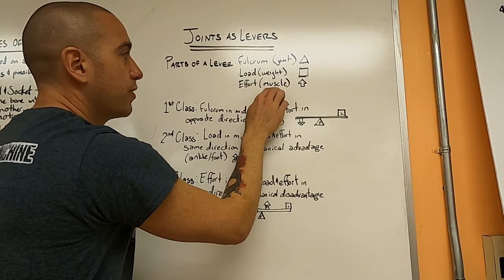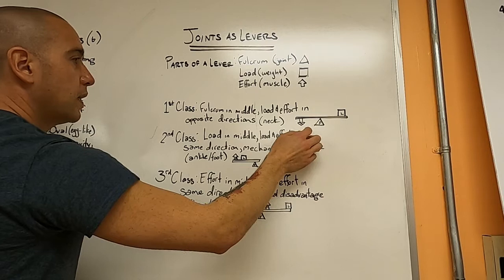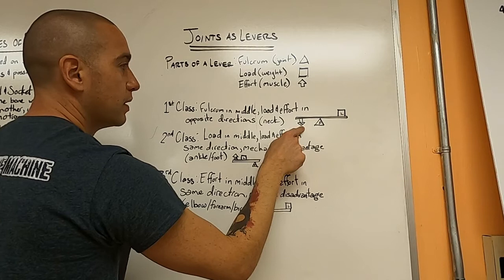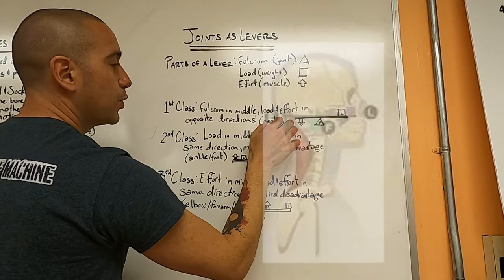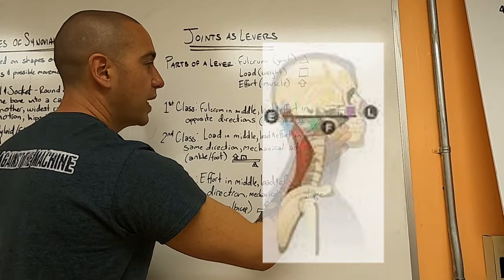In a first class lever, the fulcrum is in the middle. The load is on one side and the effort is on the other. What's interesting about a first class lever is that the effort, the pull of the effort would cause the load to move in the opposite direction. This would be like the muscles in the back of the neck here. This would be the neck itself, and this would be most of the head, the forehead, the face. So as the muscles in the back of the neck pull down, the head tilts up.